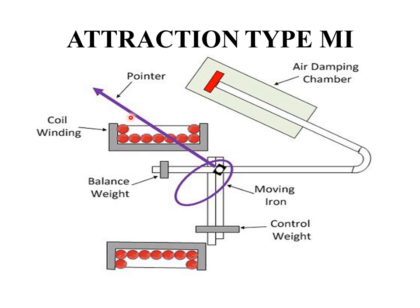Because of this attraction the pointer moves over the scale. This pointer is made up of aluminium, which is a lightweight material. The damping torque is provided by an air damping chamber; according to the movement of the piston, the damping torque is produced. The controlling torque is provided by a control weight or springs.